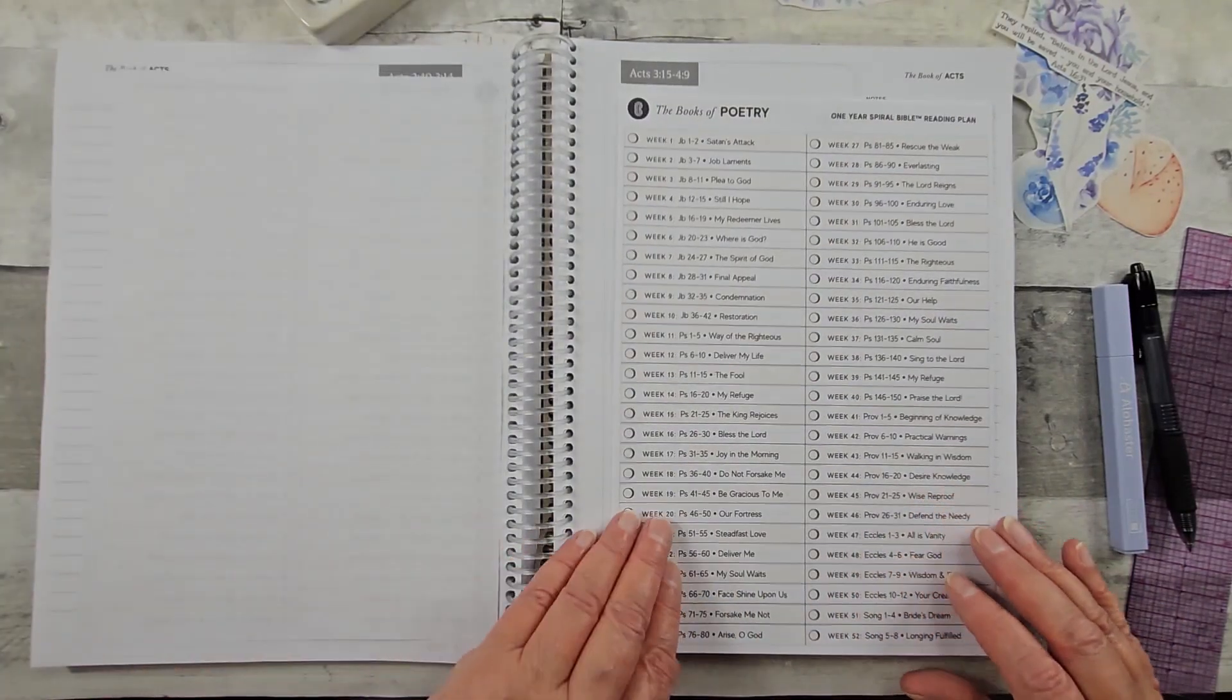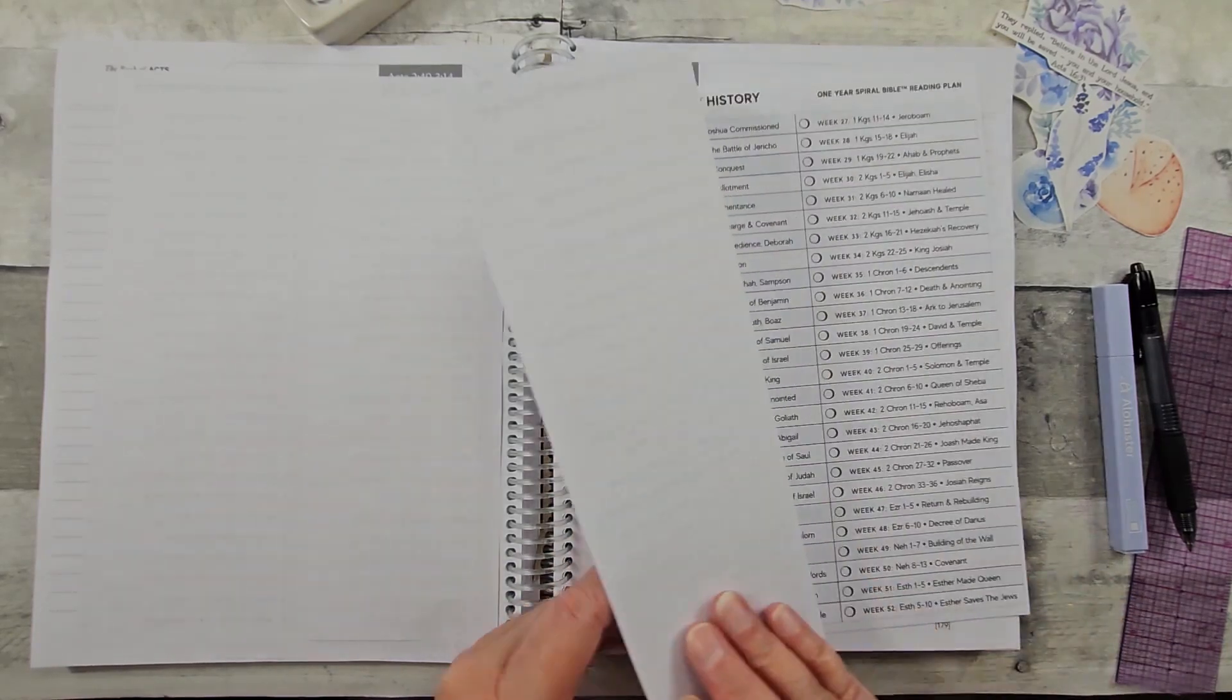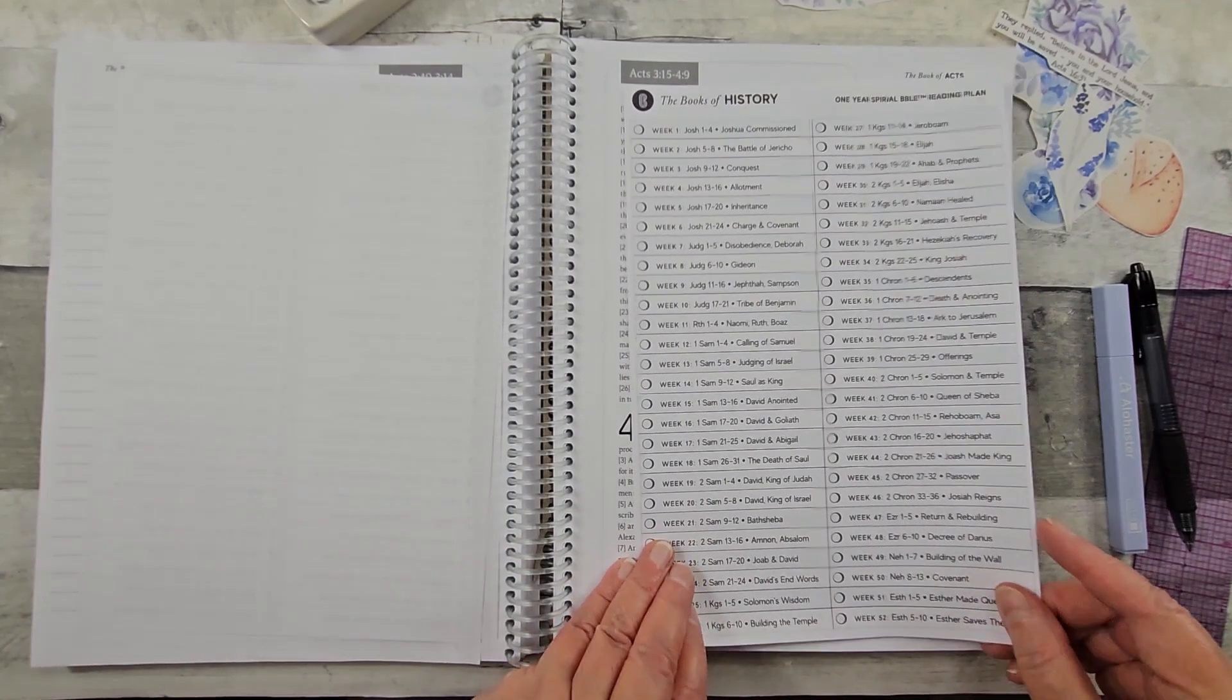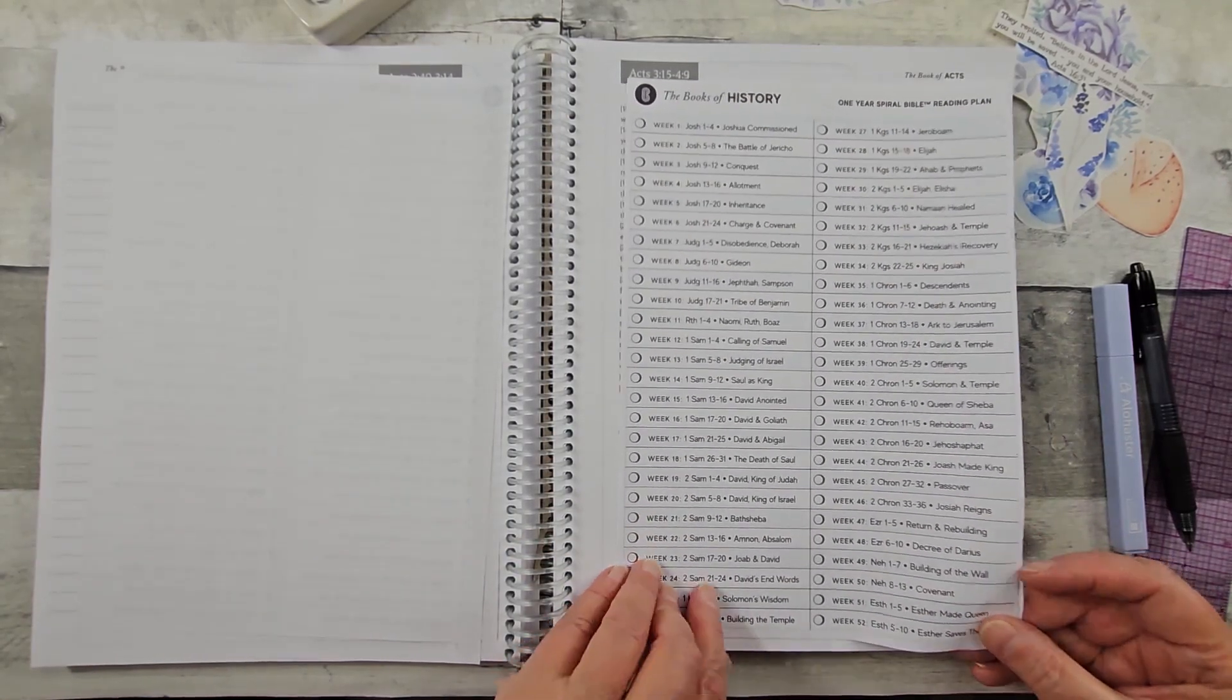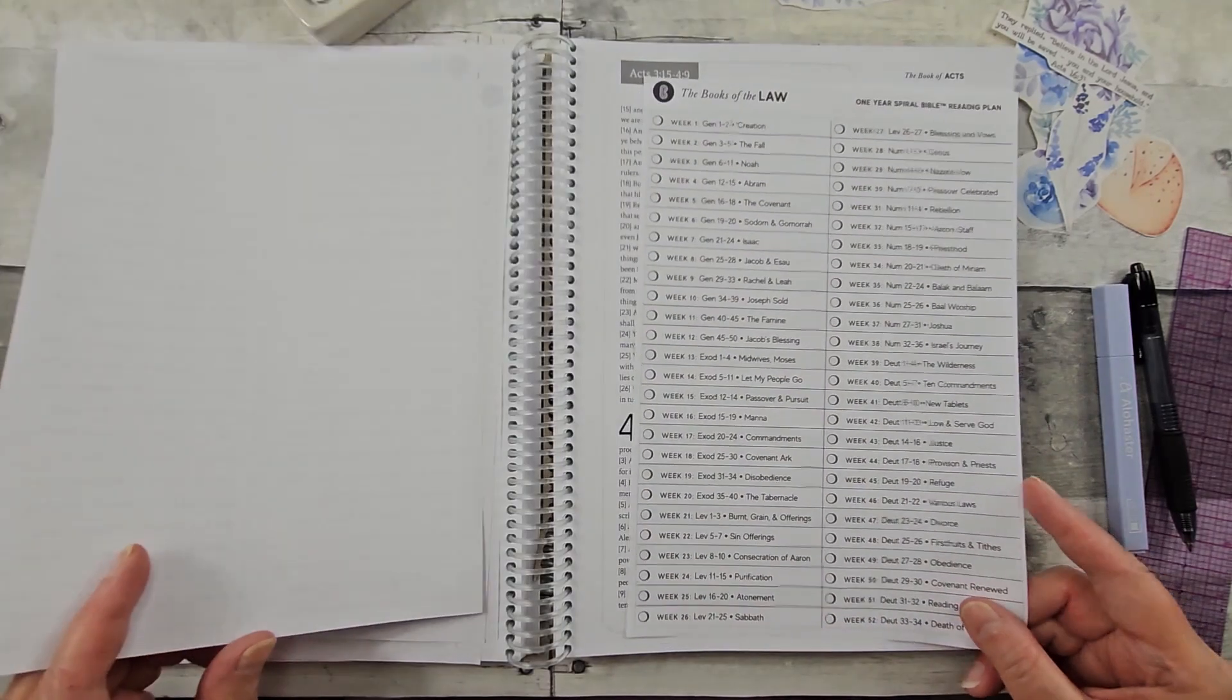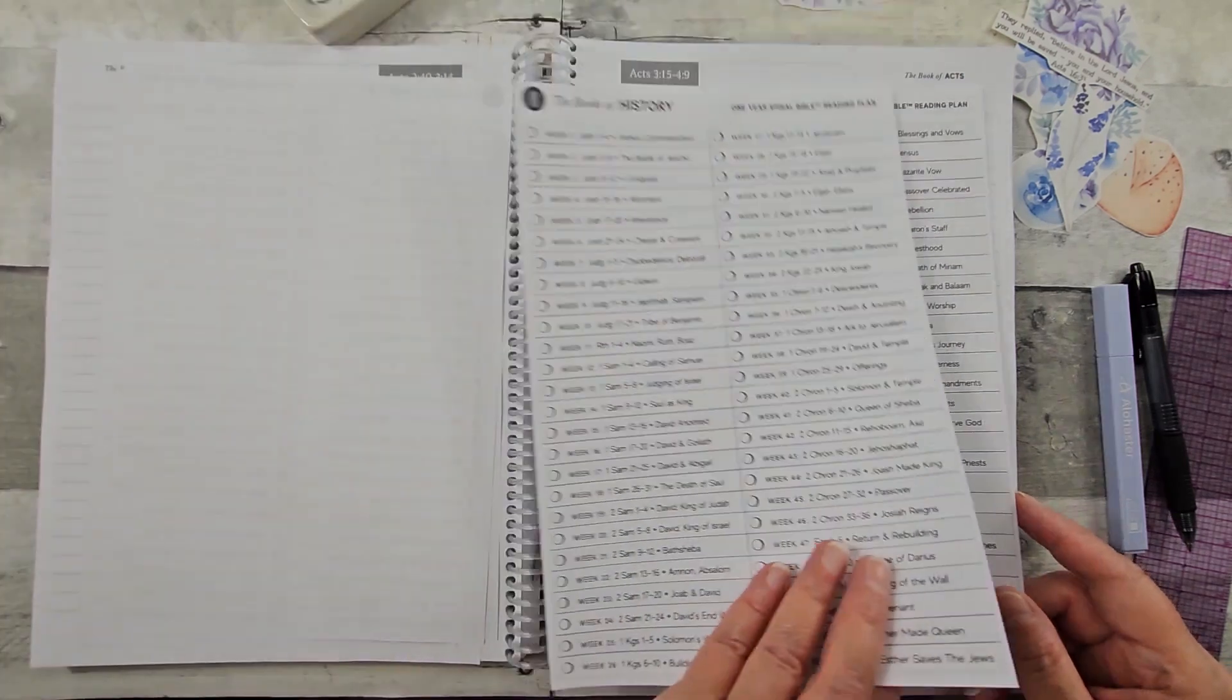The books of poetry, which would be Job through Song of Solomon. And then the books of history, which is Joshua through Esther. And then the books of the law, which is Genesis through Deuteronomy.